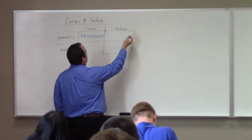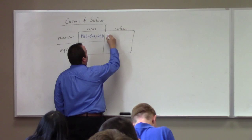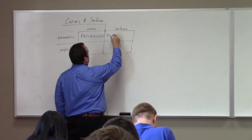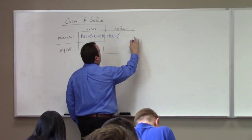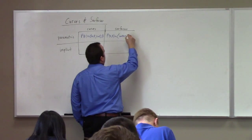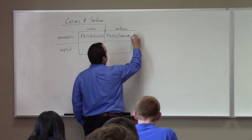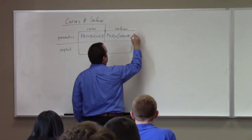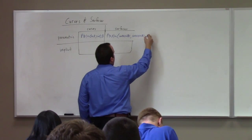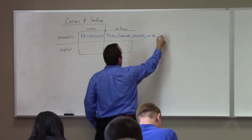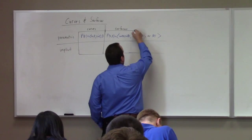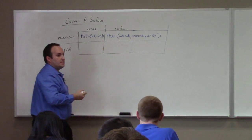A parametrized surface would be something like R of S, T equal to cosine S, sine T, sine S sine T, and then cosine T. A parametrized surface has two parameters; a parametrized curve has just one parameter.